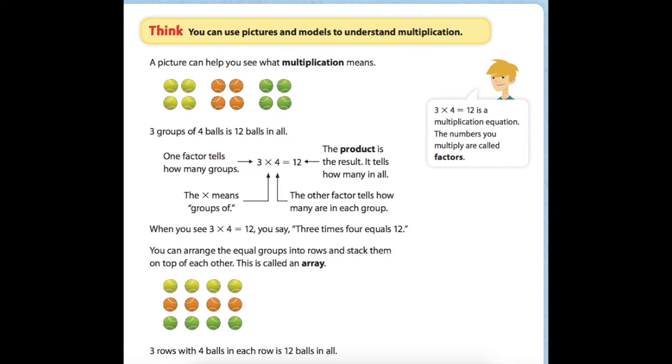You can arrange the equal groups into rows and stack them on top of each other, and then we have rows and columns. There are three rows with four balls in each row, and the total is still the same - the product is still the same, twelve balls in all.